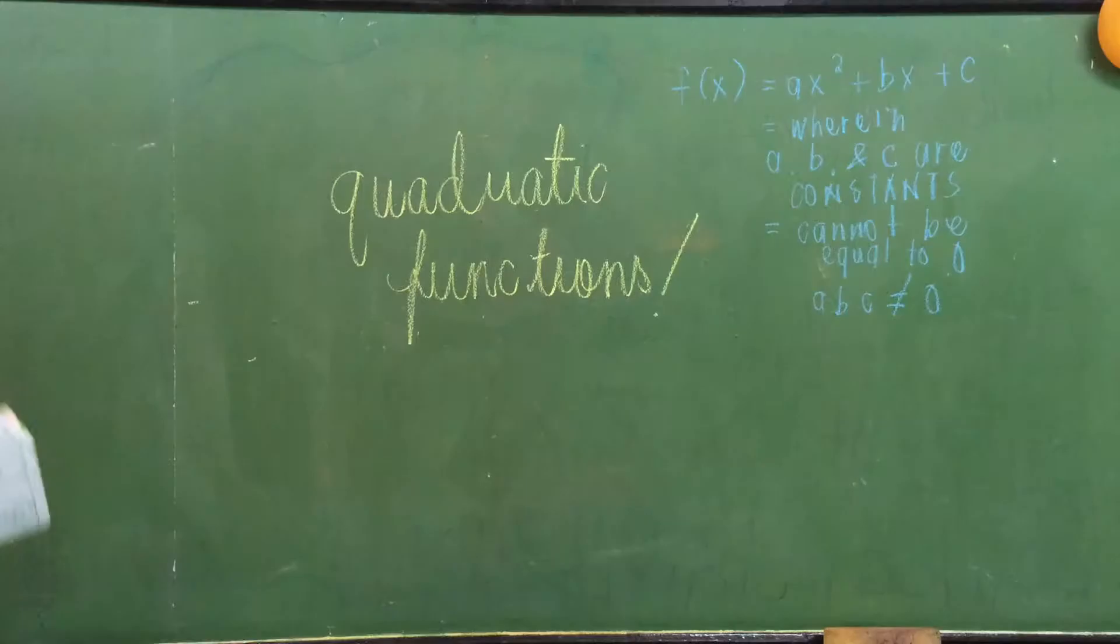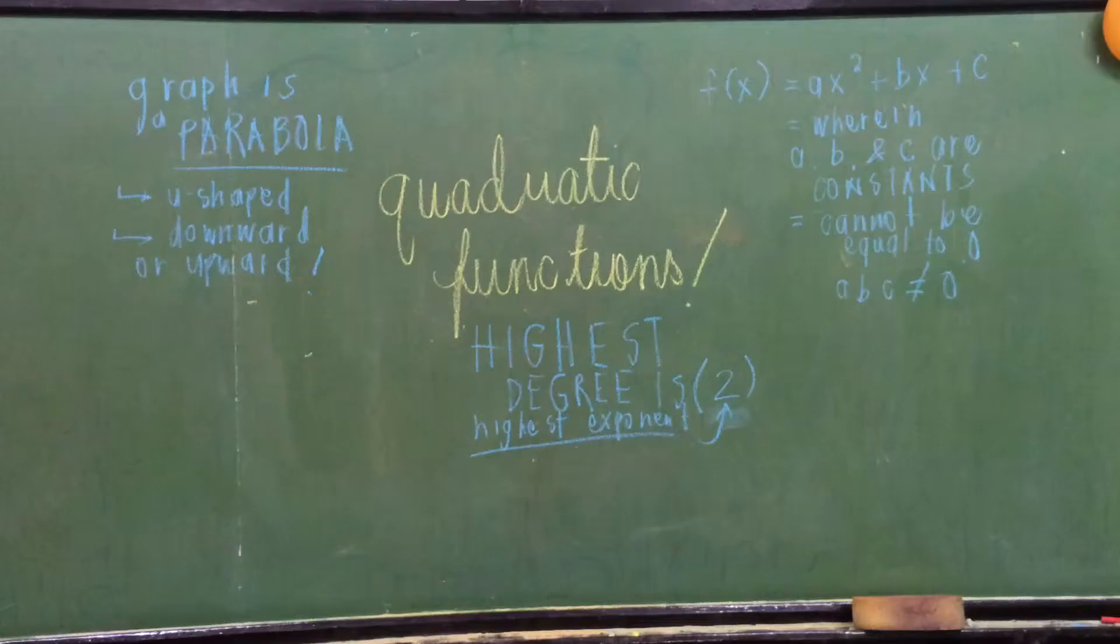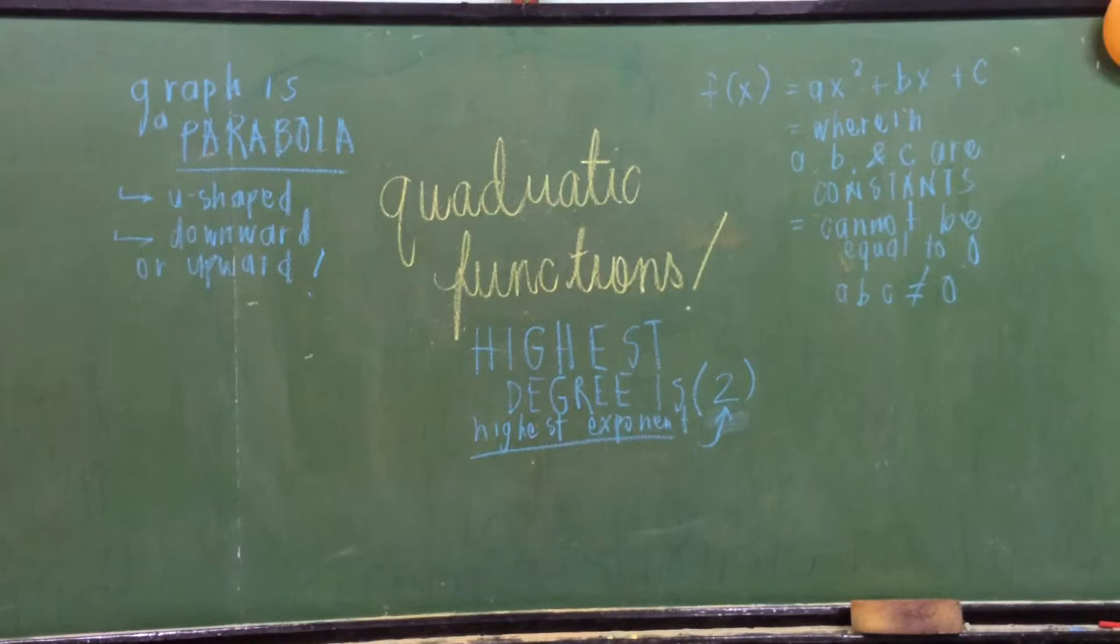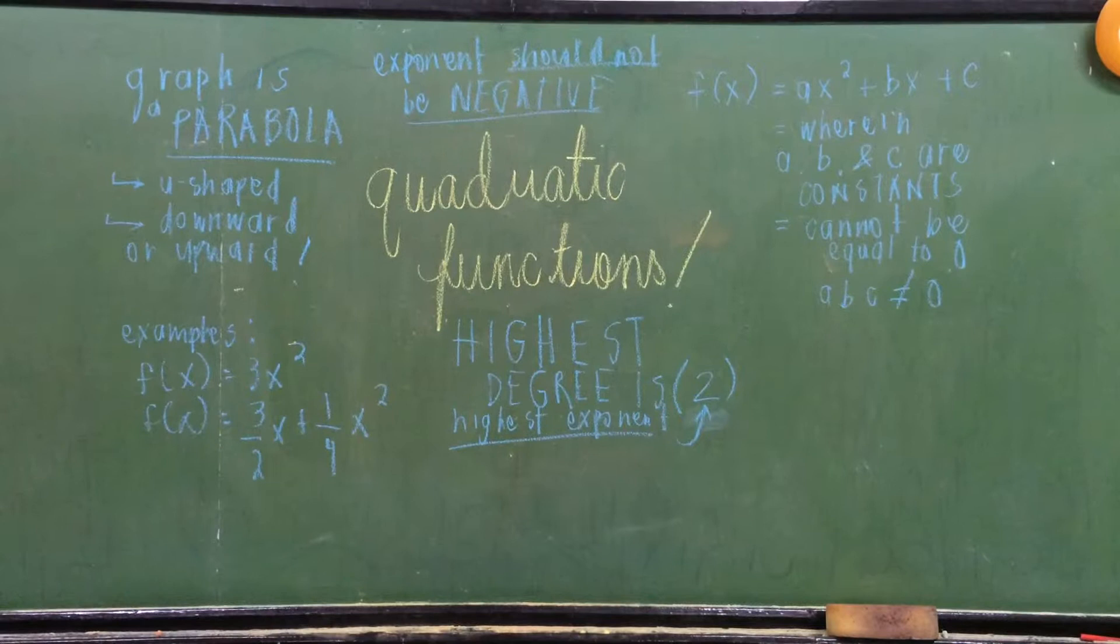A quadratic function is an equation with the highest degree of 2, meaning that the highest exponent of this function is 2. The standard form of a quadratic is y equals ax squared plus bx plus c, where a, b, and c are real numbers and a cannot be zero.